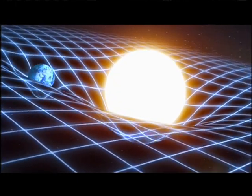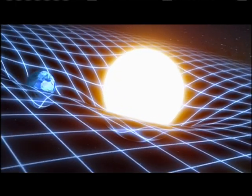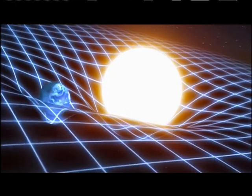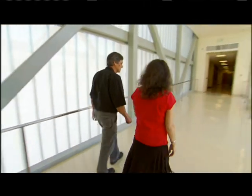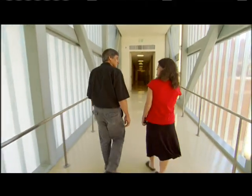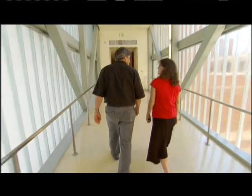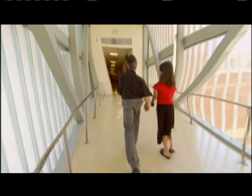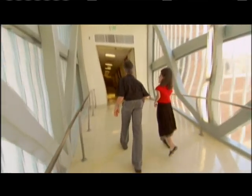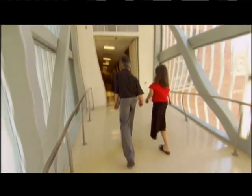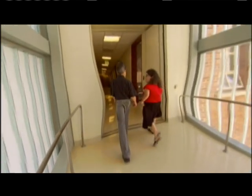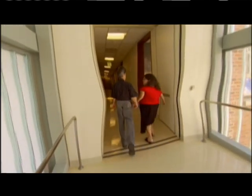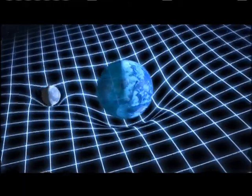Brian McNamara. What actually happens is matter warps space-time, so the very space — the three-dimensional space that we walk through — warps slightly. Every time when you walk, when I walk through space, space around me warps in on me ever so slightly, but because we're not very massive, it's so minuscule that we don't sense it.